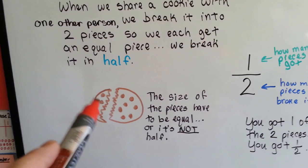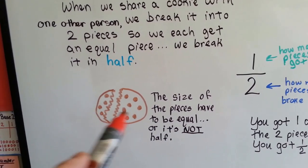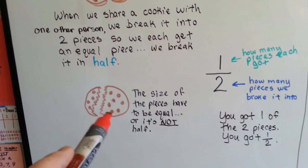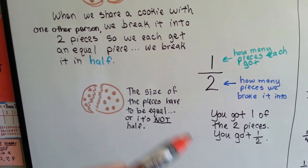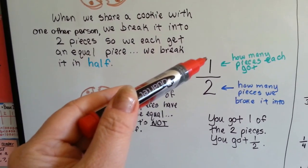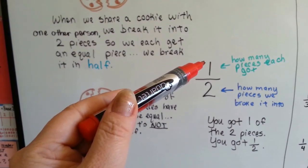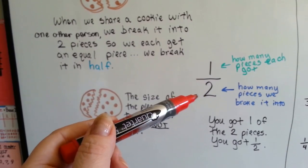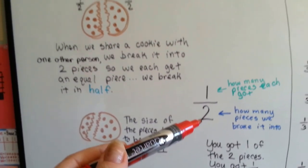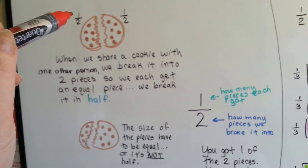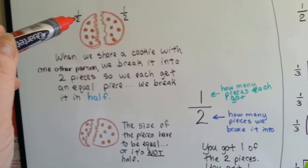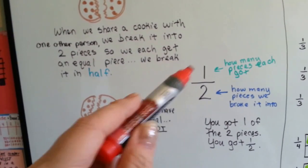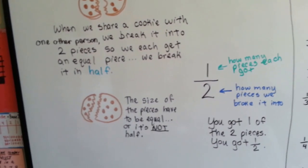You wouldn't want that piece, would you? This isn't equal — it wasn't split in half. So, remember the top number is how many pieces each got, and the bottom number is how many pieces it was broken into. So, if you got half, you got one of the two pieces.